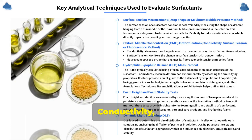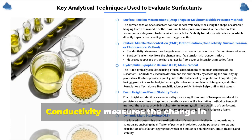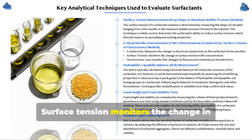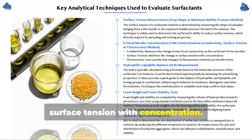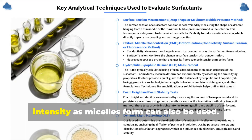Conductivity, surface tension, and fluorescent probes can be used to detect CMC. Conductivity measures the change in conductivity as the surfactant forms micelles. Surface tension monitors the change in surface tension with concentration. Probes that change their fluorescence intensity as micelles form can also be used.